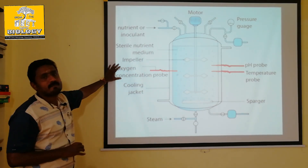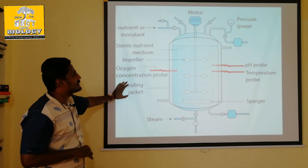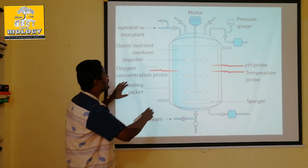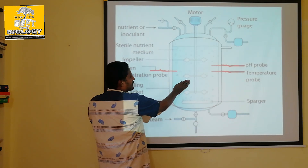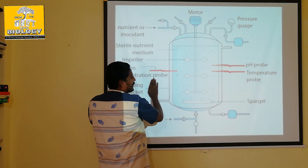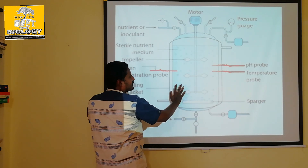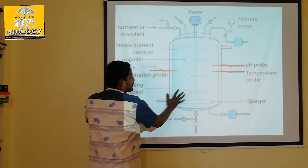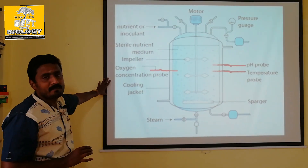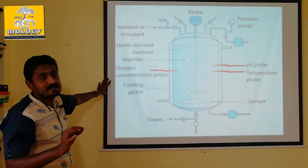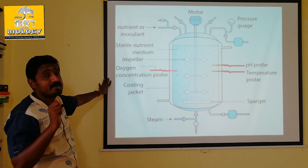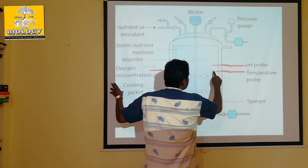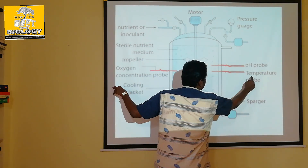This is a cooling jacket. You can put a double layer in the air to maintain the temperature. The optimum temperature is maintained inside the medium. So this is the temperature control component.